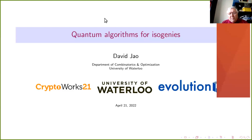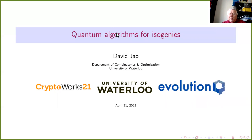The speaker received his PhD from Harvard under the supervision of Noam Elkies, then moved to Microsoft Research where he collected a large number of small cubes, implying he had some patterns. He then moved to the University of Waterloo and is one of the pioneers of isogeny algorithms for post-quantum systems.